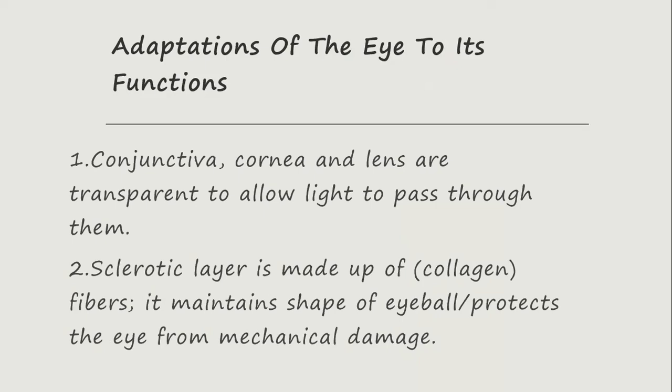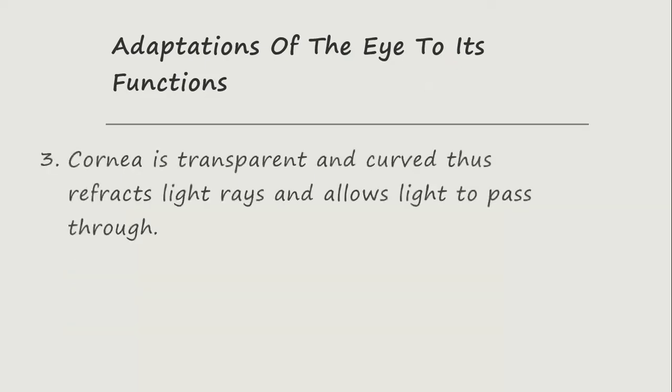The other adaptation is the cornea, which is transparent and curved, as it refracts the light rays and allows light to pass through them. The cornea, being curved and transparent, enables the refraction of light rays and also allows the light to pass through.